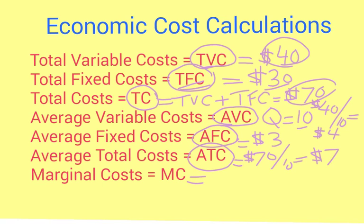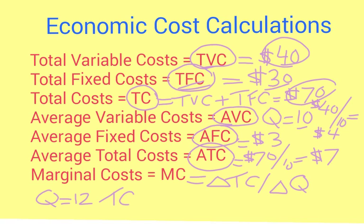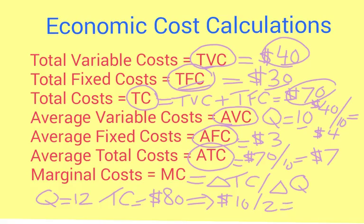Marginal cost is the change in total cost divided by the change in the number of products we make. Let's say that at quantity 12 we find a total cost of $80. Total cost increased from $70 to $80, so the change is $10. We increased production from 10 to 12 products, a change of 2. So marginal cost is $10 divided by 2, which equals $5.